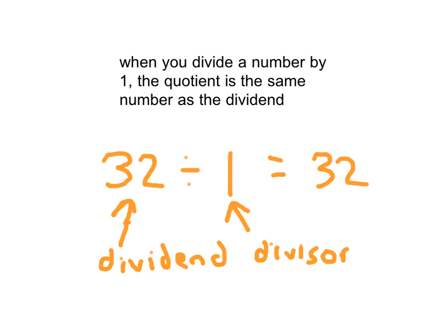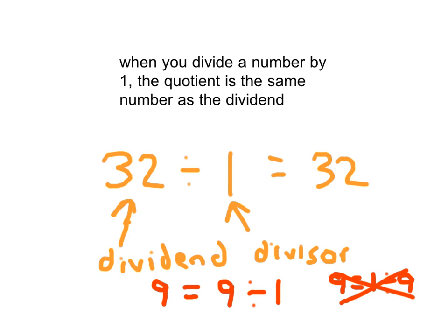Write down another example for yourself. If I had 9, it's 9 divided by 1. Don't get caught — you can't write 9 equals 1 divided by 9. We would be dividing 1 into 9 parts, and 1 ninth does not equal 9. The order matters. That's why we have these terms: the dividend and quotient are the same number.